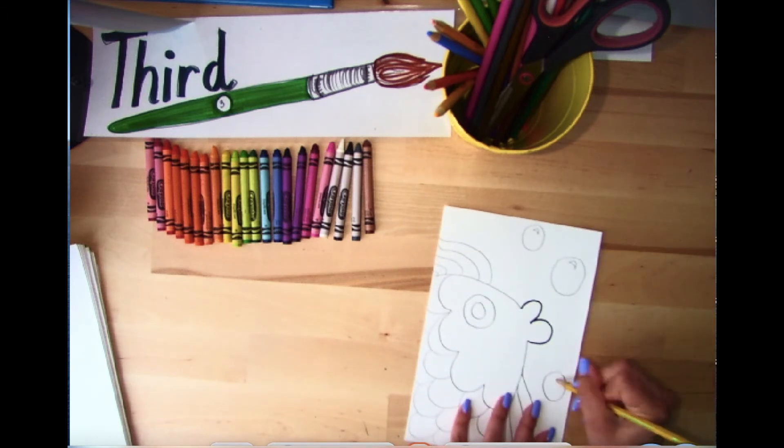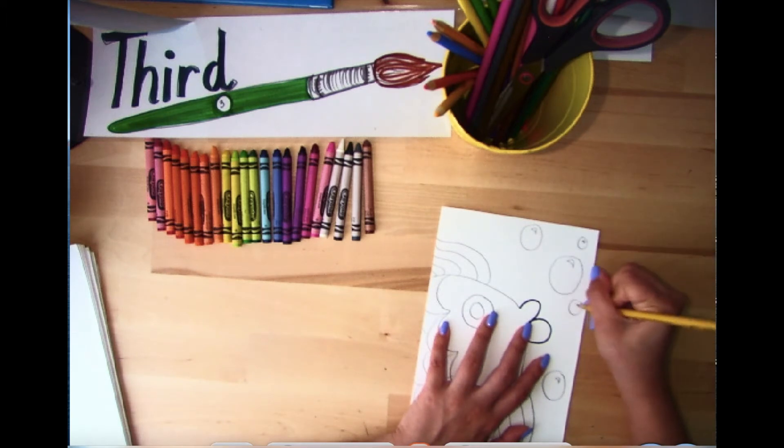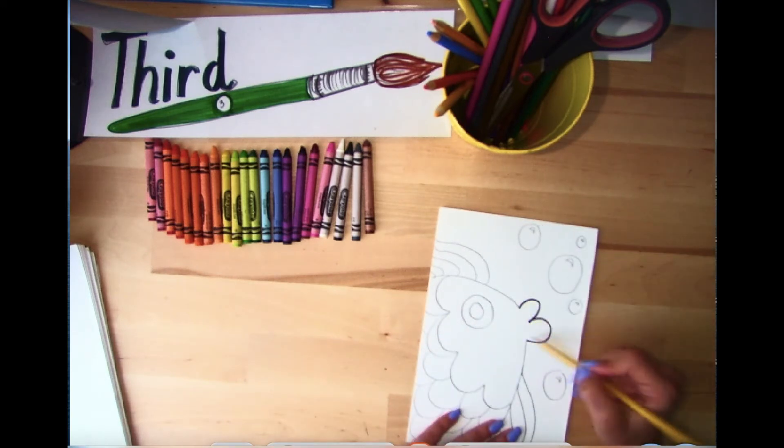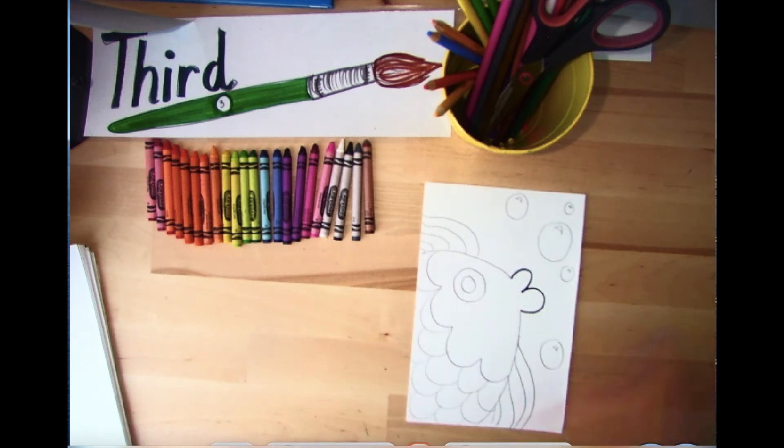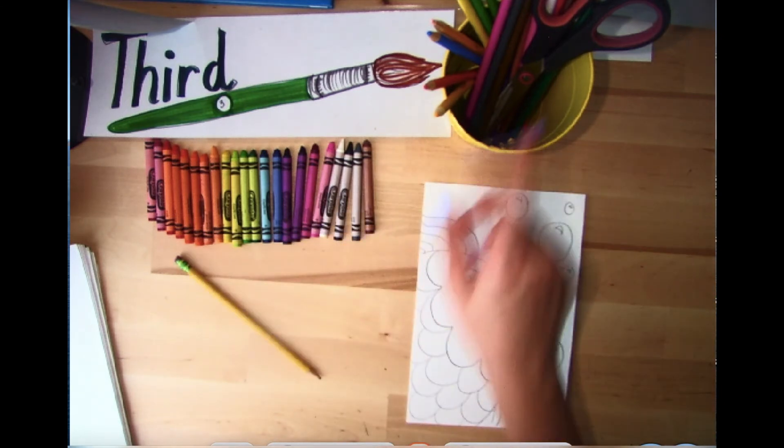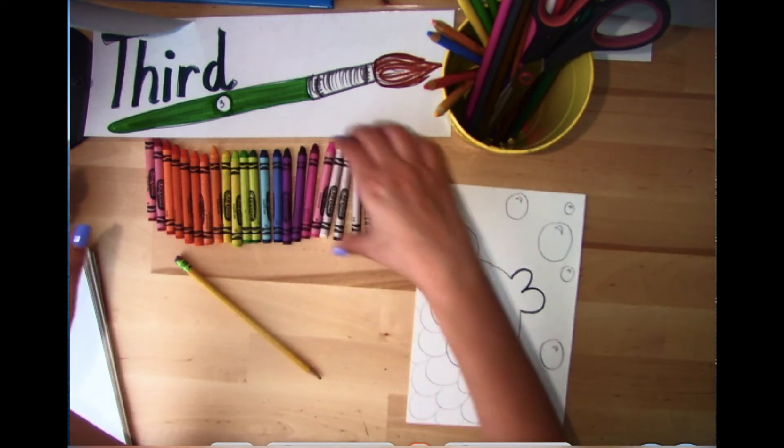So an important part of this project is I don't want any markers to be used because I want the three to be the only thing that's in that marker because it's a Sharpie, right? And then I would take crayons or I can take colored pencils, whichever I choose to start coloring my fish.